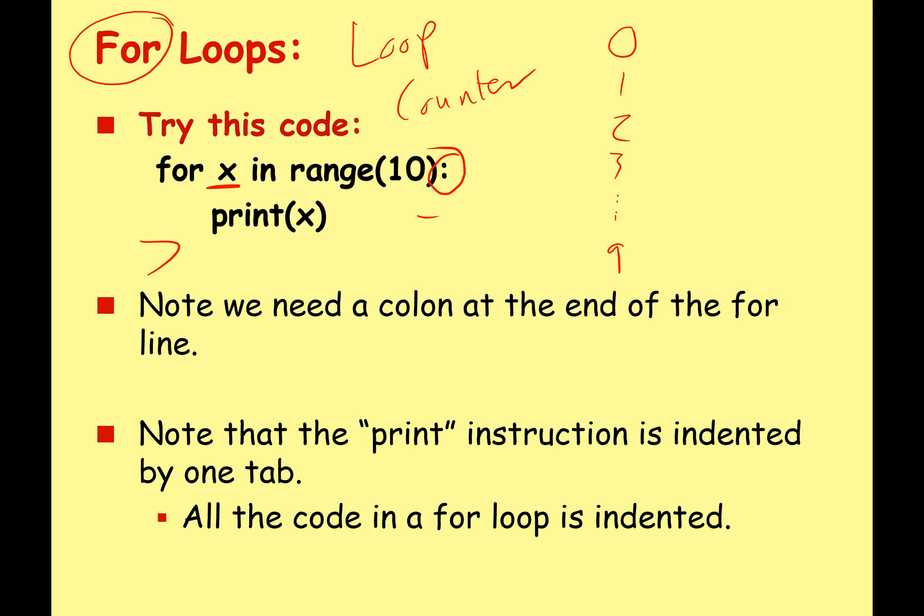Don't forget we need a colon at the end there. Just like with the if, elif, else blocks, we need the colon just to say we're going to have a block of code that's connected to this line. And don't forget we're going to need an indentation here as well. All the code that executes during the for loop must be indented so that we know that it's part of the for loop.